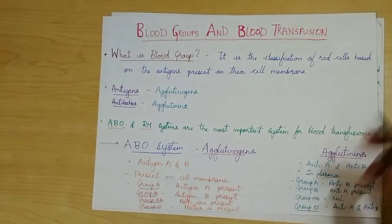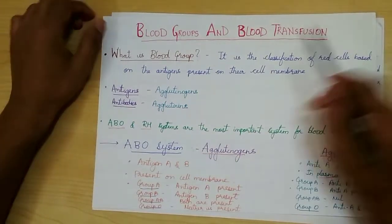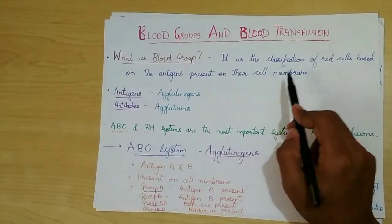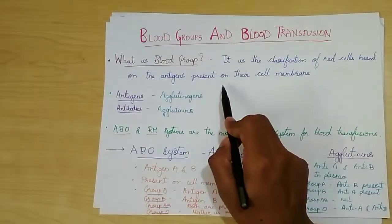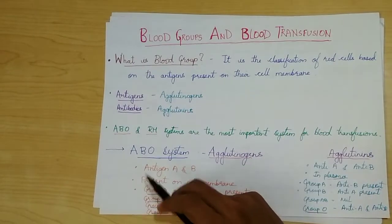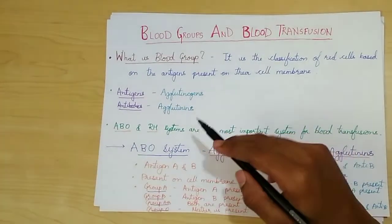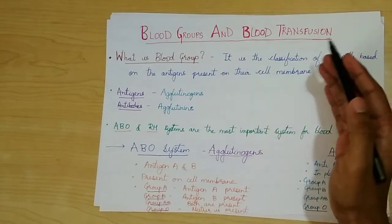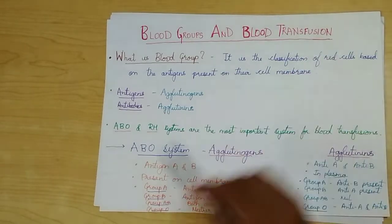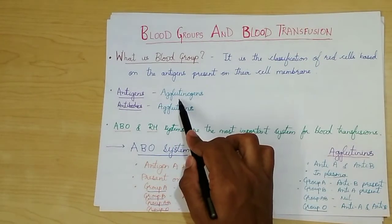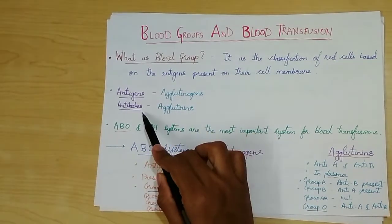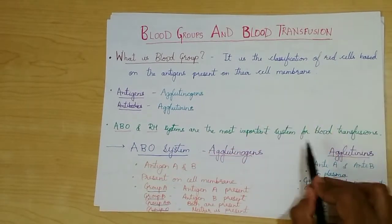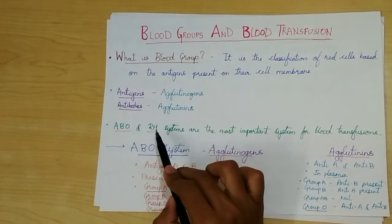Let's talk about today's topic: blood groups and blood transfusion. A blood group is the classification of red cells based on the antigens present on the cell membrane. Similarly, the corresponding antibodies will be absent in the plasma according to Landsteinner's law, which we will discuss later. The antigens are also called agglutinogens and antibodies are called agglutinins. The most commonly used systems for blood transfusions are the ABO and RH systems.